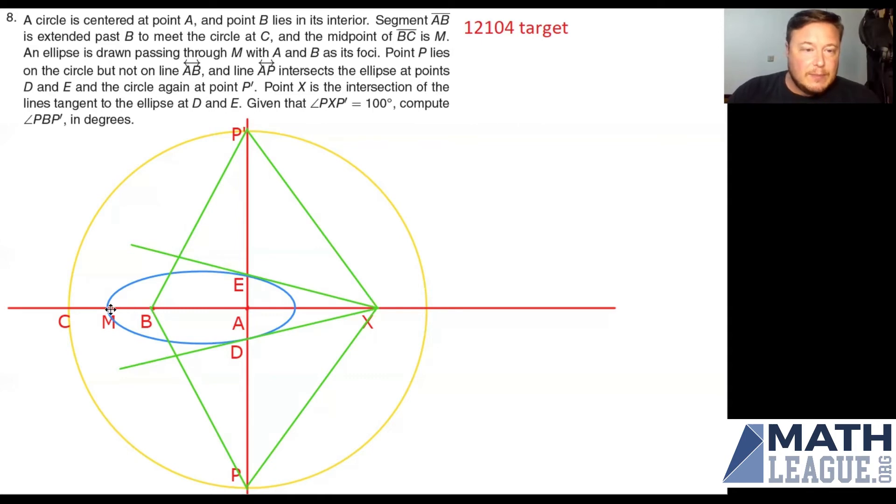So starting at B, going up to M, and then back to A, that in particular is going to give me the same overall distance that I've traveled as if I go from B up to E and then down to A. Now what this does is it helps us with a very important point here. AE plus EB is going to be the same as AM plus MB. That's based on what we know about an ellipse.